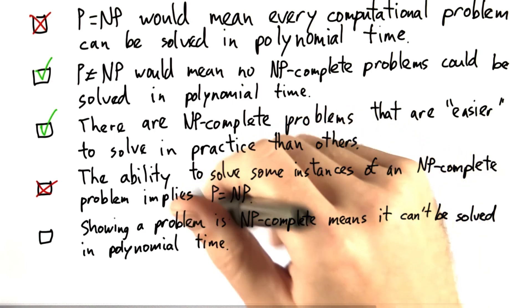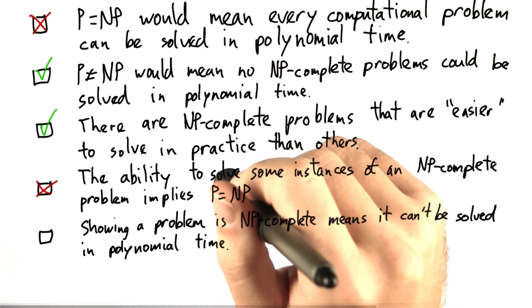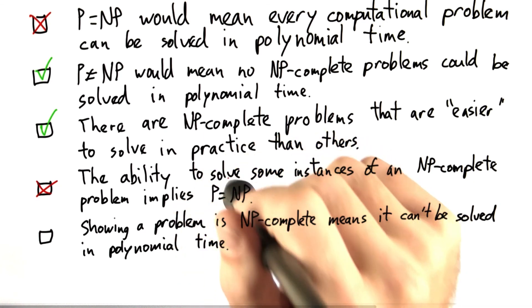And for P equal to NP, we really have to concern ourselves with every single possible instance of a problem. And that's really where NP becomes quite complicated.